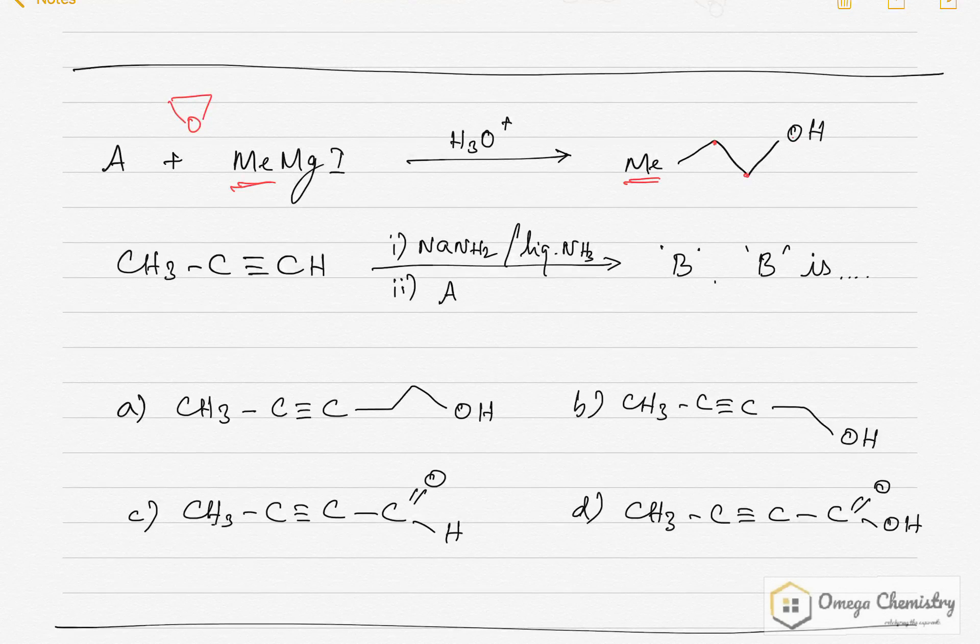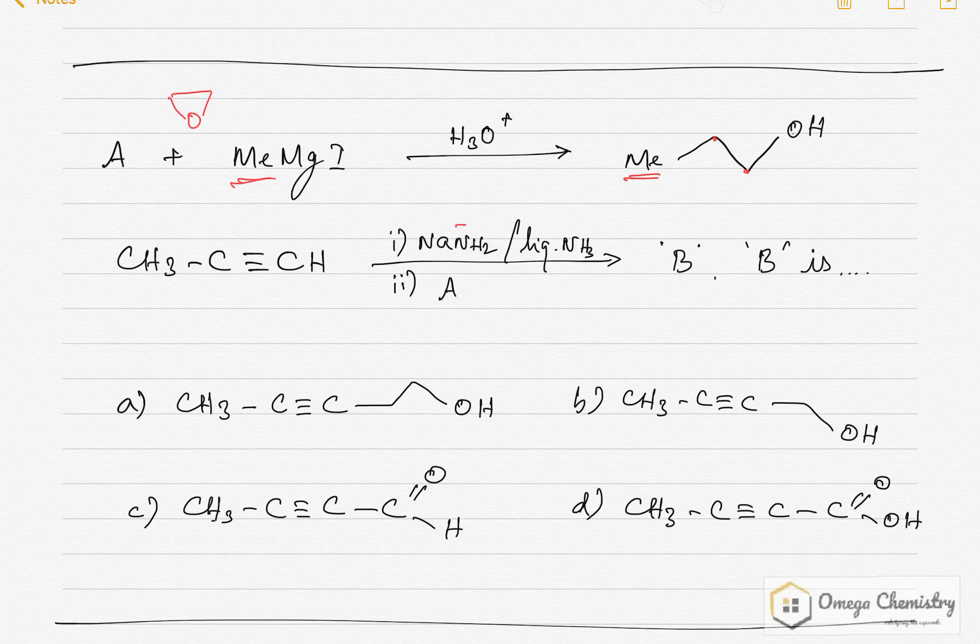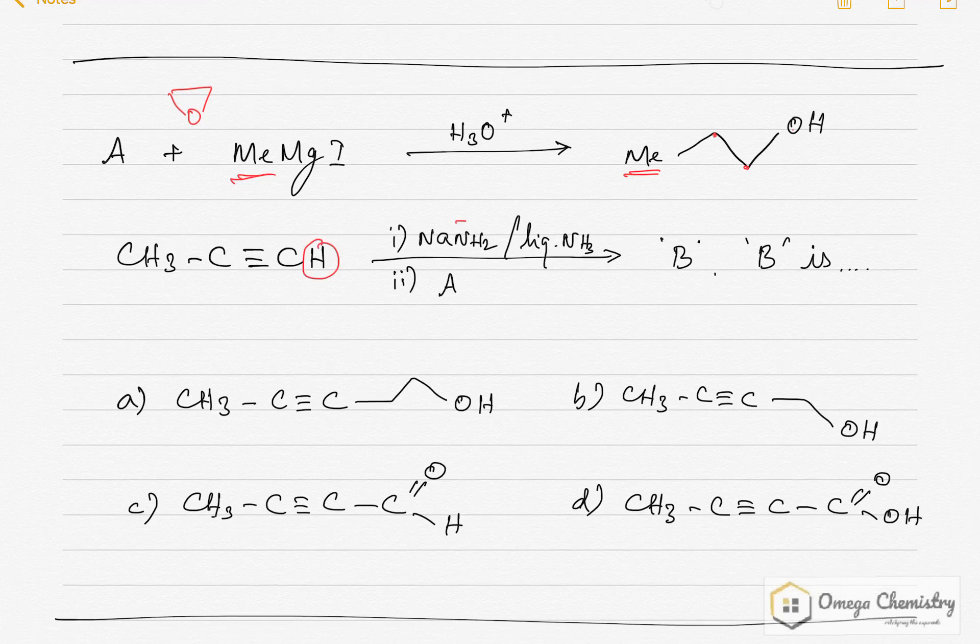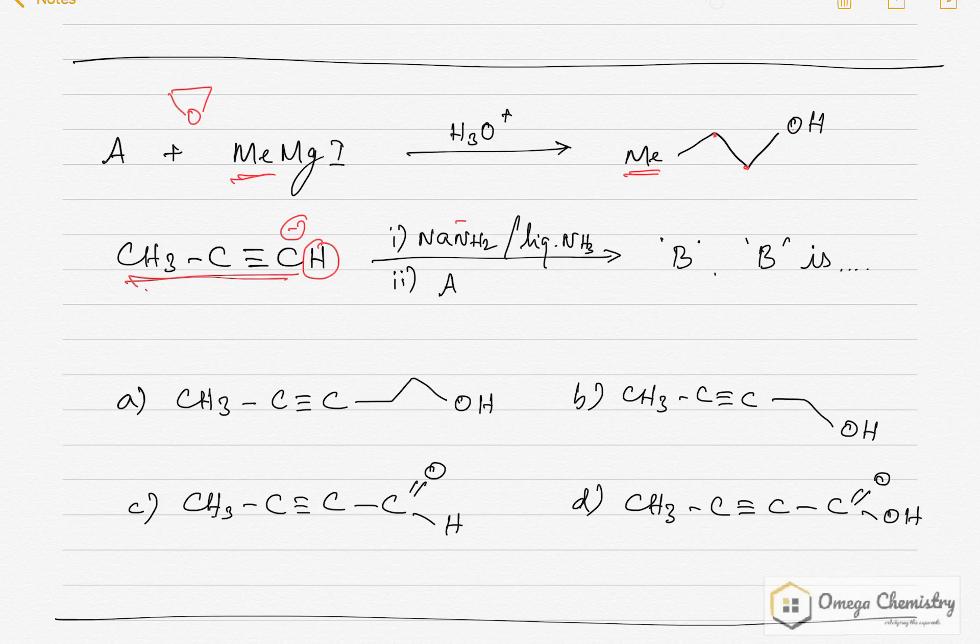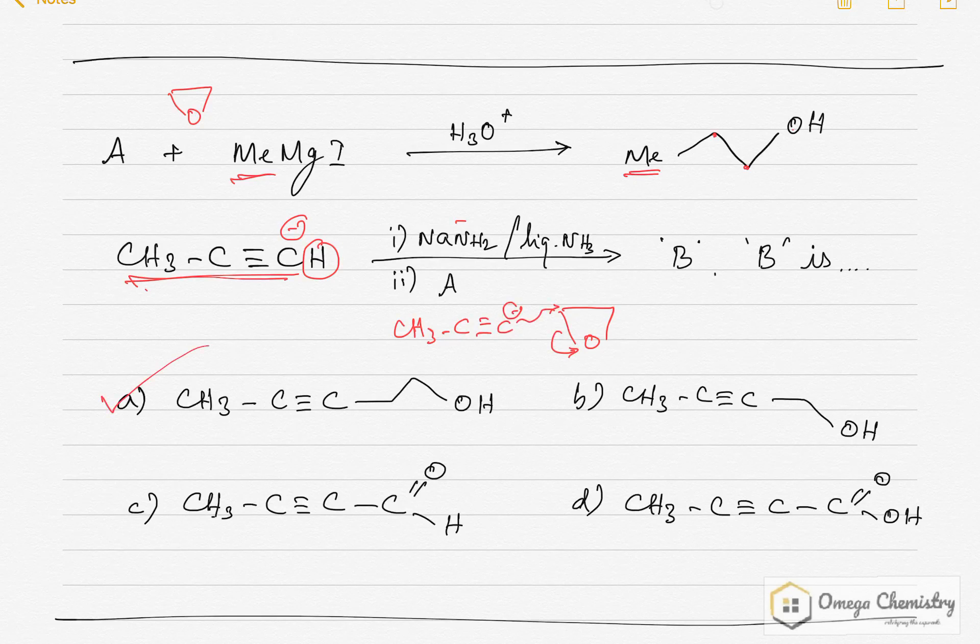And so, when I have an epoxide ring like this, then this CH3-C triple bond C, this ion would have attacked here and the ring would have opened like this. So, A will be the answer. Thank you guys. Happy learning.